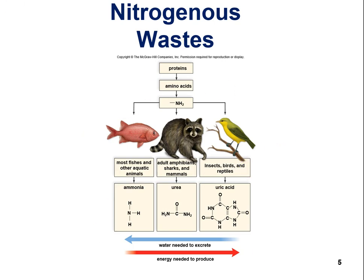To summarize in picture form: nitrogenous wastes are formed by the breakdown of proteins and amino acids — wastes containing nitrogen — and basically they form ammonia. Ammonia can only be excreted directly in aquatic animals, since it requires lots of water. For adult amphibians, sharks, and mammals, ammonia is converted into urea and excreted. There's a certain amount of water and energy needed for that chemical conversion.